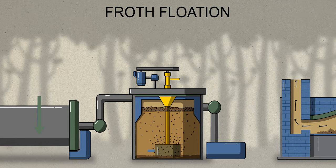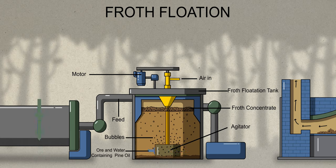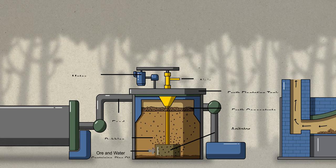Step 3 is froth flotation. The slurry is placed in a tank and a process called froth flotation is used to separate the copper minerals from the waste material. Chemical reagents called collectors are added to the slurry. These reagents make the copper particles hydrophobic or waterproof, and a liquid called frother is also added. Pine oil or long chain alcohols are often used as frothers. Then air is blown into the bottom of the tank to create bubbles, which rise to the surface taking the waterproof copper sulfide particles along. The froth of the copper-rich bubbles at the top of the tank is then skimmed off for further processing, while the waste material sinks to the bottom and is removed or disposed.